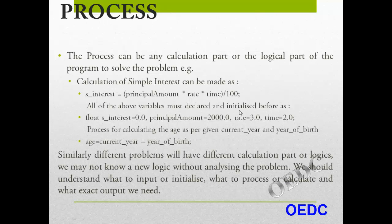All variables must be declared and initialized before the process. Like simple interest = 0.0, principal amount may be input during the program, rate may be 3.0, time may be 2.0 — whatever may be. But it should be initialized or declared before the process. For example, calculating the age: age = current year − year of birth. We should know how the age is calculated.